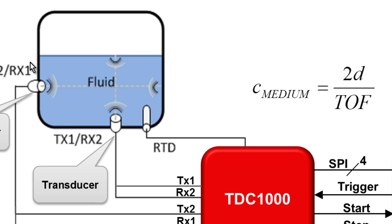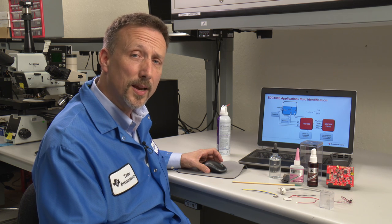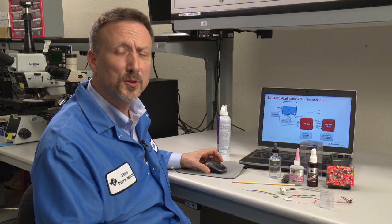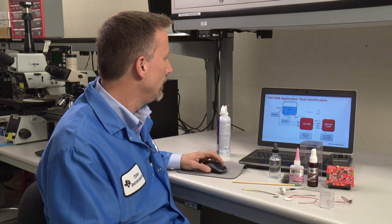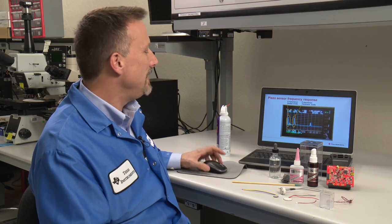This is useful for applications where I need to non-invasively determine what's in my container. This is helpful for some situations where materials are caustic, or I don't have access to them. Now let's talk a little bit about the transducers themselves. We did an overall view of the transducers. Now let's look at some examples.